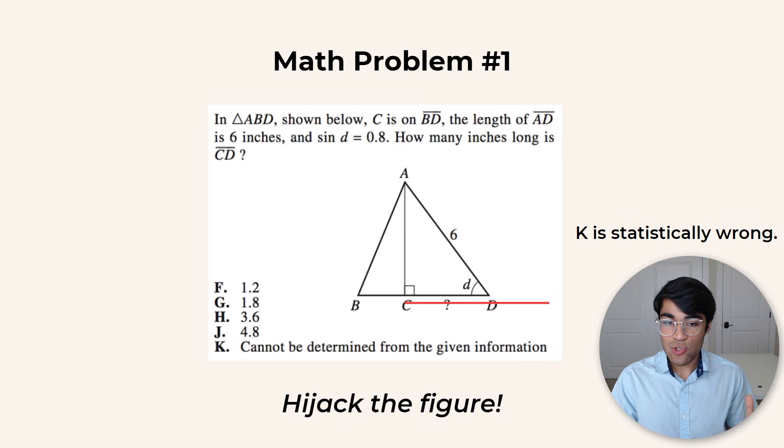Statistically, each answer choice should be right around 20% of the time, but this 'cannot be determined' option is actually correct less than 20% of the time. So you have a higher chance of guessing one of the numbers and using a strategy like hijacking the figure.